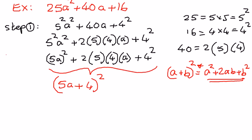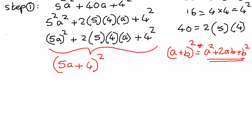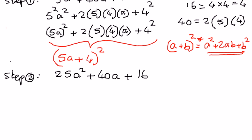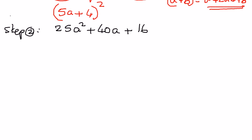I am going to show you another way — that was one way. I am going to write that as step number 2. We will take the given trinomial: 25a to the power of 2 plus 40a plus 16. In this, we want to know: is 25 a perfect square? Yes — 5 to the power of 2. Is a squared a perfect square? Yes. Is 16 a perfect square? Yes — 4 to the power of 2 is 16.